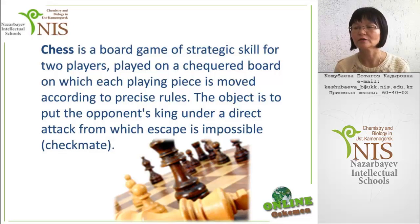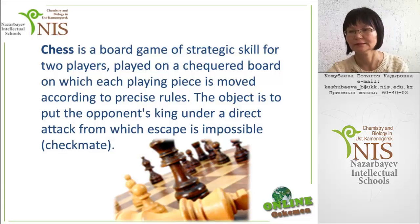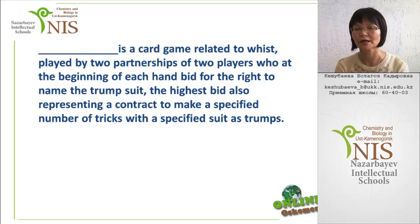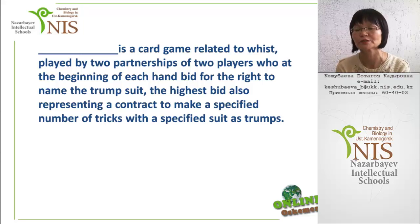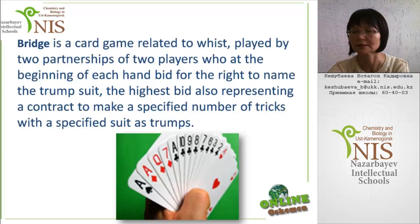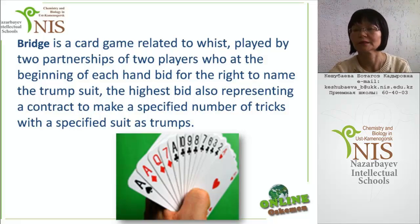Chess is a board game of strategic skill for two players. Next game: it is a card game related to Whist, played by two partnerships of two players who at the beginning of each hand bid for the right to name the trump suit. The highest bid also represents a contract to make a specified number of tricks with a specified suit as trumps. What is the name of this game? It is bridge. Bridge is a card game related to Whist played by two partnerships of two players.